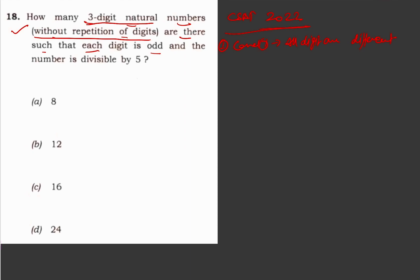So we can form this - this is the first place, second place, and third place. Condition number one is all digits are different. Second condition is that all digits are odd. All digits are odd, that means you are left with digits 1, 3, 5, 7, and 9.